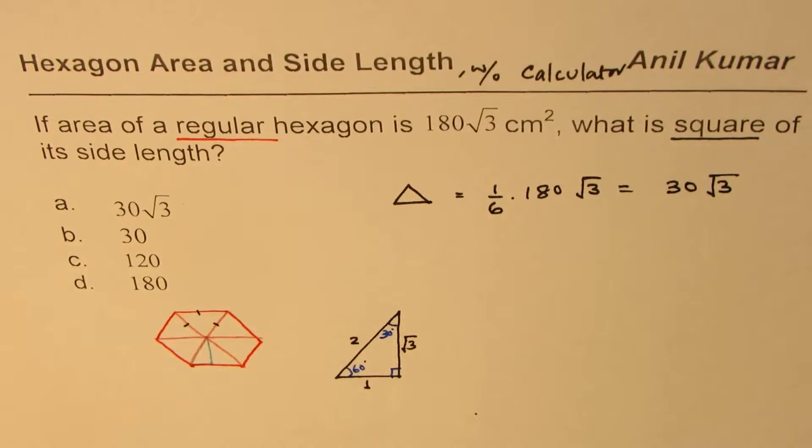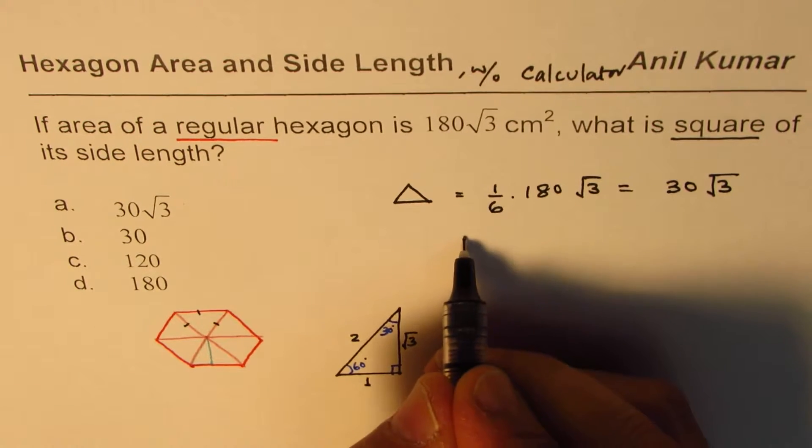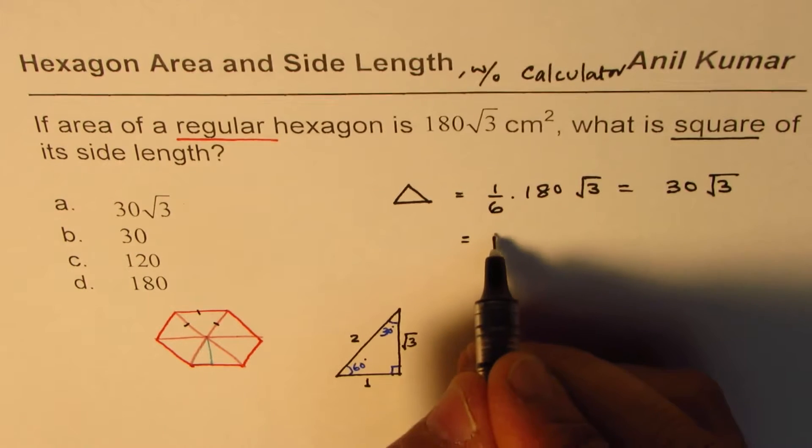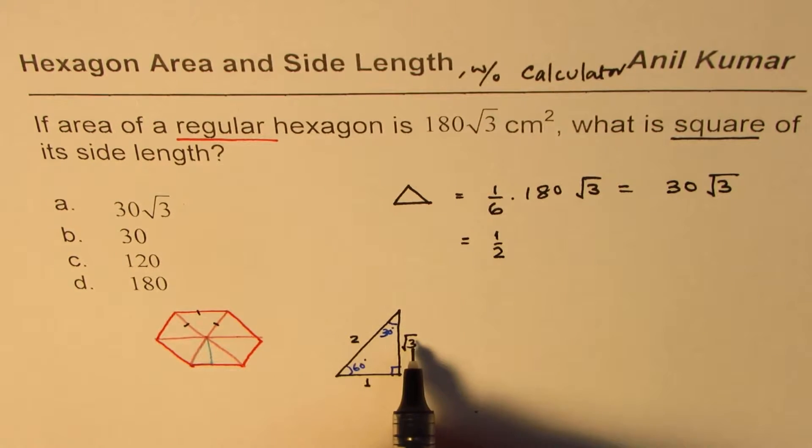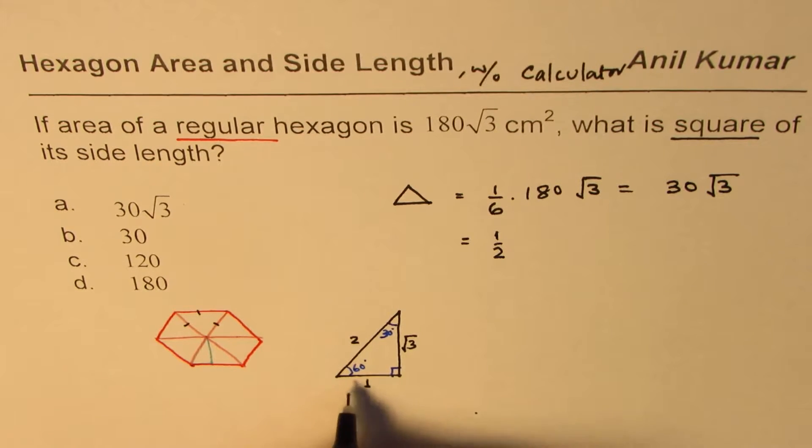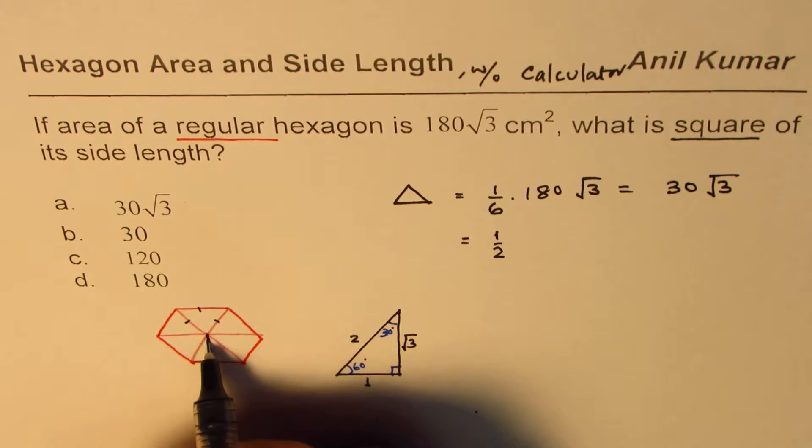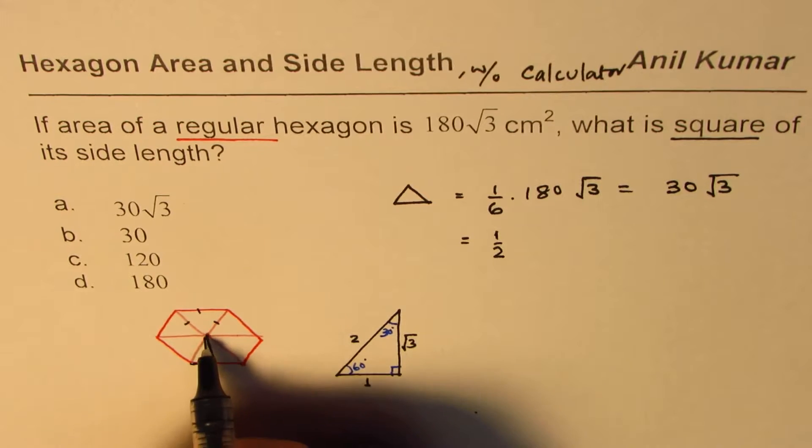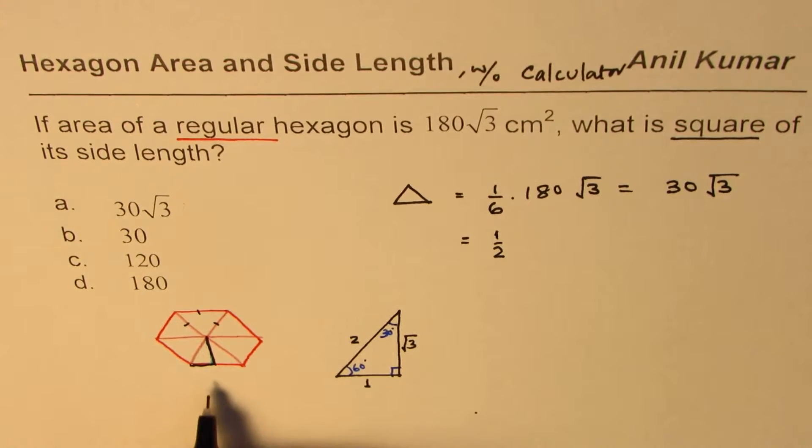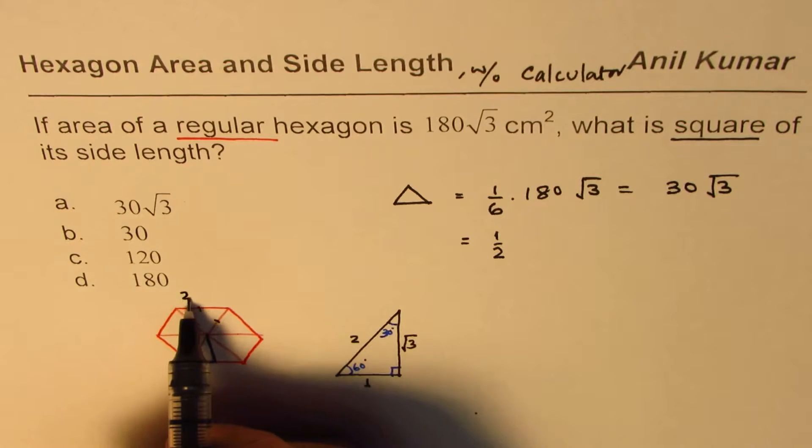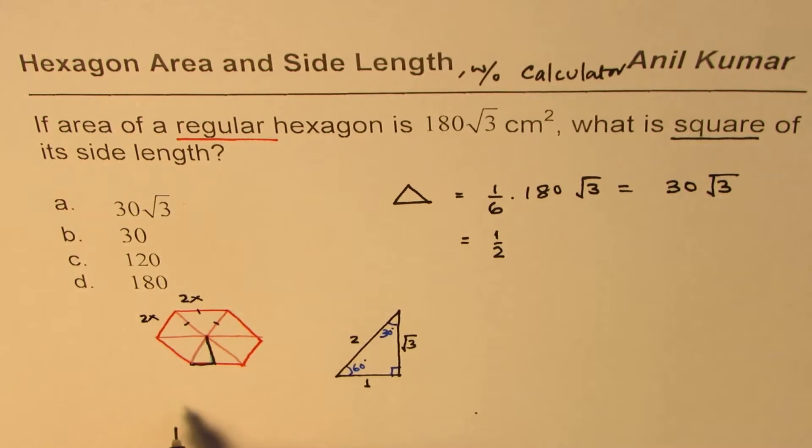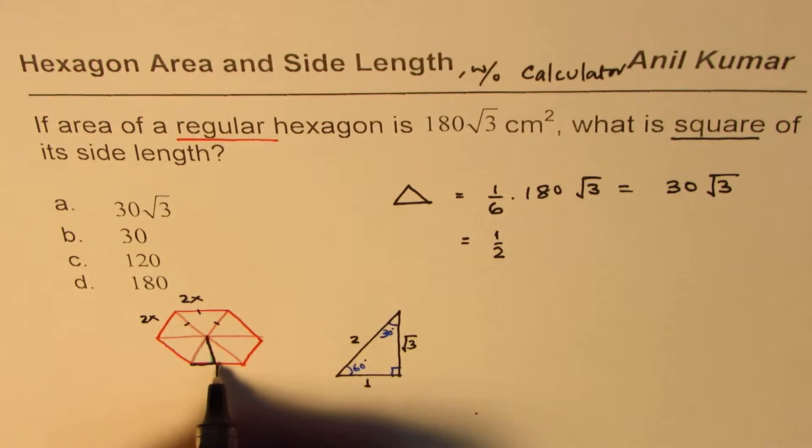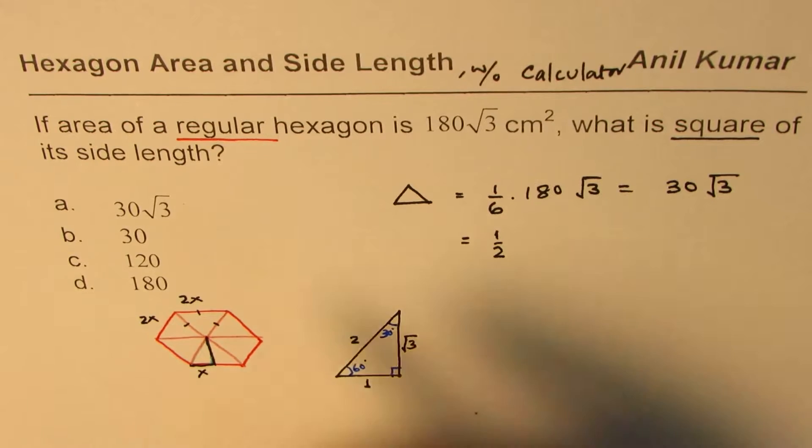Now as you know, triangle area is half of base times height. Since we see this ratio is 1 to 2 to square root 3x, we'll take the length as 2x. Let 2x be the length of each side. In that case for the triangle, the side will be x.